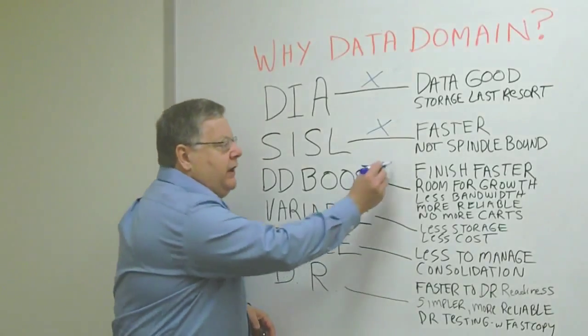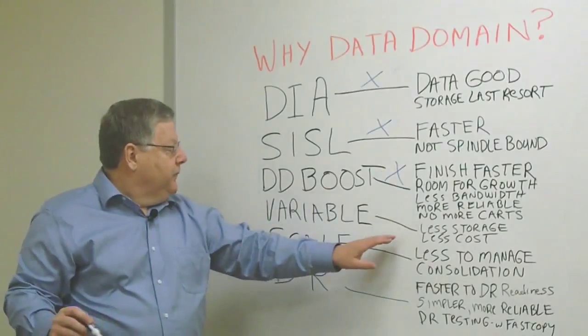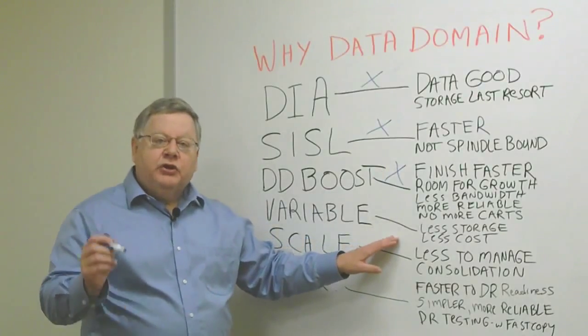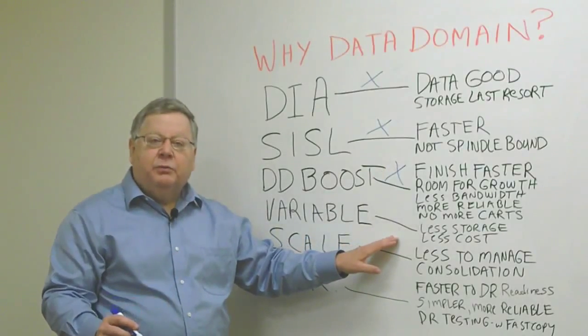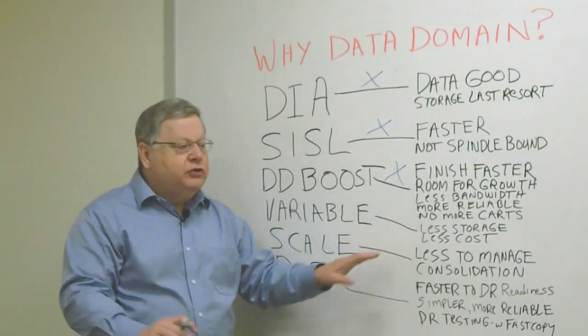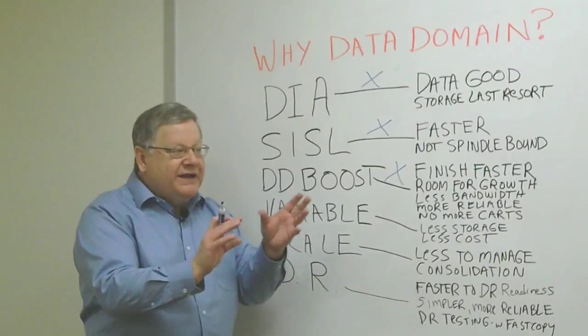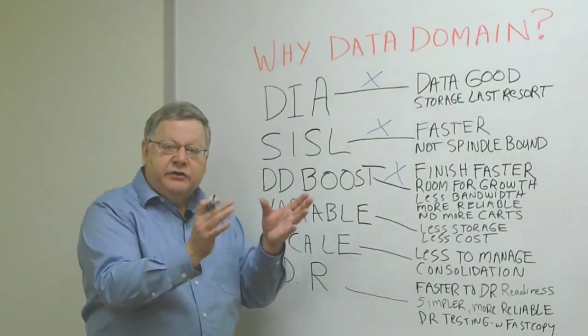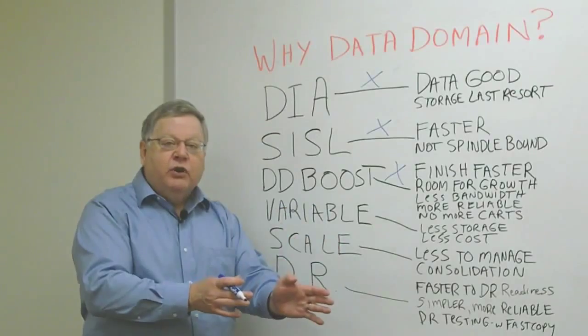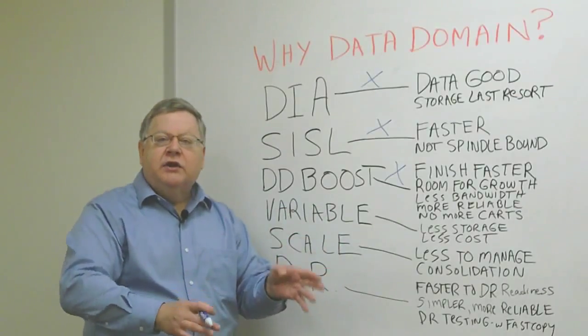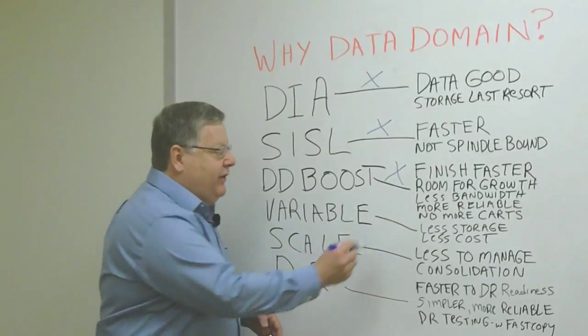Variable length deduplication is more efficient than fixed length deduplication. What that means for you is you're going to require less deduplication storage at your primary site, less deduplication storage at your disaster recovery site, less replication bandwidth between the two sites. In the end, simpler and much more cost-effective.